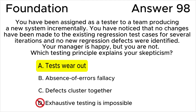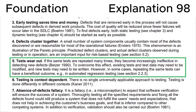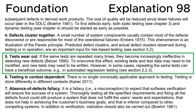Answer D is invalid because this principle states that testing all combinations of inputs and preconditions is not feasible. Looking at section 1.3, Testing Principles, in the ISTQB syllabus, Testing Principle 5 is 'Tests Wear Out': if the same tests are repeated many times, they become increasingly ineffective in detecting new defects. To overcome this, existing tests and test data may need to be modified and new tests written. However, in some cases repeating the same tests can have a beneficial outcome, for example in automated regression testing.